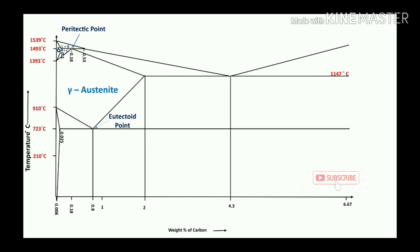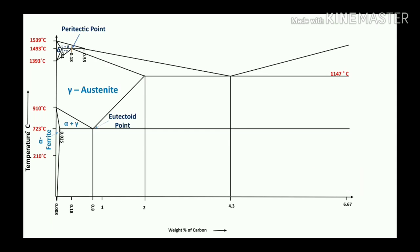The second point is the eutectoid point at 0.8% carbon and 723°C. According to the solubility of carbon in iron, at temperatures between 910°C and 210°C and 0.025% carbon, it forms only a single solid represented as alpha phase — alpha ferrite. So alpha plus gamma austenite on one side, and gamma plus cementite on the other. Cementite is only formed after 0.8% carbon.